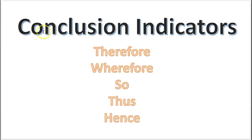Next are the conclusion indicators. When dissecting an argument, you'll look for premise and conclusion — that's the first step. Conclusion indicator words include 'therefore,' 'wherefore,' 'so,' 'thus,' and 'hence.' For instance: 'The garbage is piling up, you haven't taken it out in 24 hours, I've been watching you on video camera — therefore, you do not take out the garbage enough.' Or: 'The garbage is piling up, video camera shows you don't take out the garbage — so, you do not take out the garbage enough.' If you see one of these words, you probably know that a conclusion is coming next.